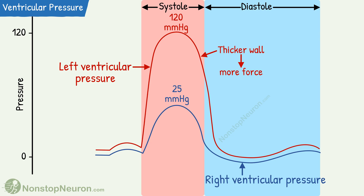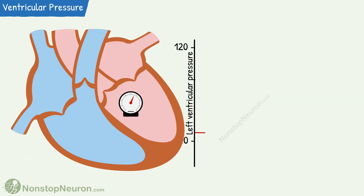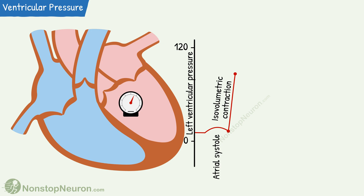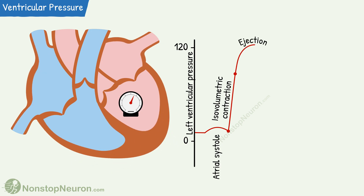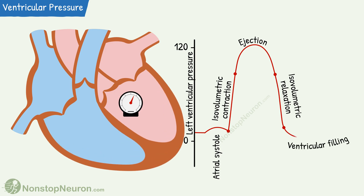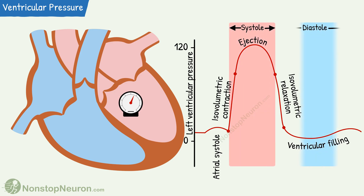This was all about intraventricular pressure during a cardiac cycle. Now let's have a quick summary. Atrial systole produces a slight rise in pressure. Isovolumetric contraction produces a sharp increase. During ejection, pressure initially increases, reaches the maximum, and then starts falling. During isovolumetric relaxation, the pressure falls sharply. During ventricular filling, the pressure falls and then gradually starts increasing. Then the next cycle begins with atrial systole. In the graph, this part is systole and this part is diastole.